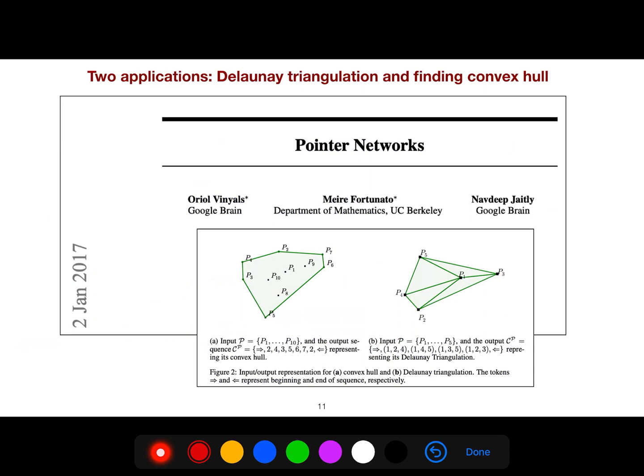There are two applications in the original paper, Pointer Networks, in 2017. One of them is Delaunay triangulation - very important for computational fluid dynamics for mechanical engineers, aerospace engineers, those people who want to do finite element analysis or finite volume method. In applied mathematics, it's very important. Also, finding convex hull - it's still so amazing that we still have a challenge with this computationally, but pointer networks can help a lot.